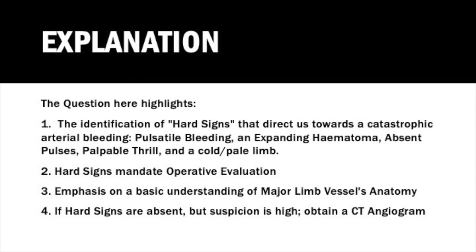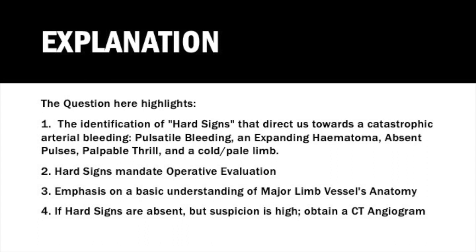The question emphasizes identifying hard signs. Hard signs are: an expanding hematoma, pulsatile bleeding, absent pulses, palpable thrill, and a cold or pale limb. If any of these hard signs are present, the patient needs operative management. The same applies to penetrating neck injury — we have moved away from zone 1/2/3 classification to looking for hard signs. If hard signs are present, the patient needs operative evaluation; if absent, you can further investigate to determine the extent of damage.